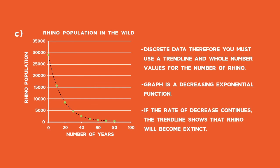Based on the trends observed, if the rate of decrease continues, the trend line shows that rhino will become extinct.